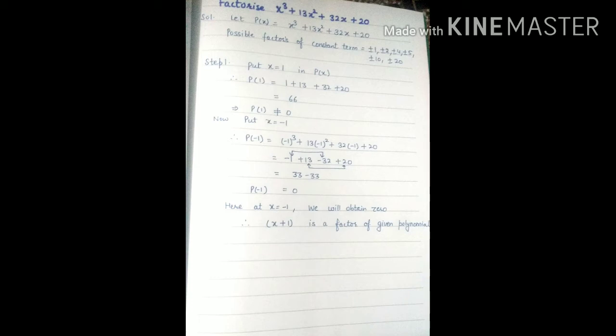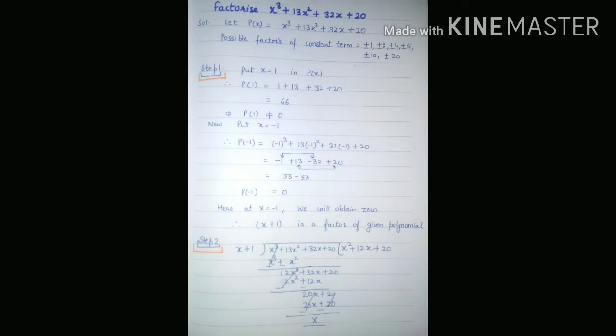Now write step two. In step two, we have to use long division to divide P(x) by x + 1 to find out the other possible factors.